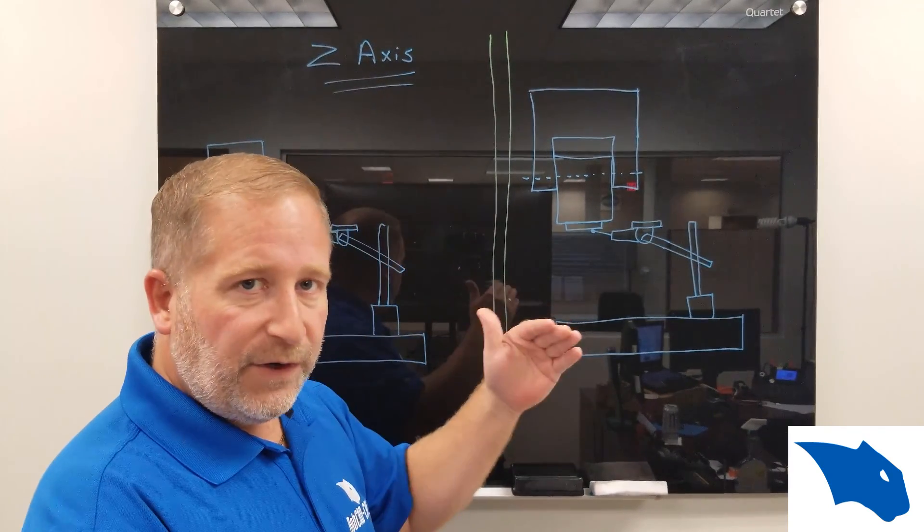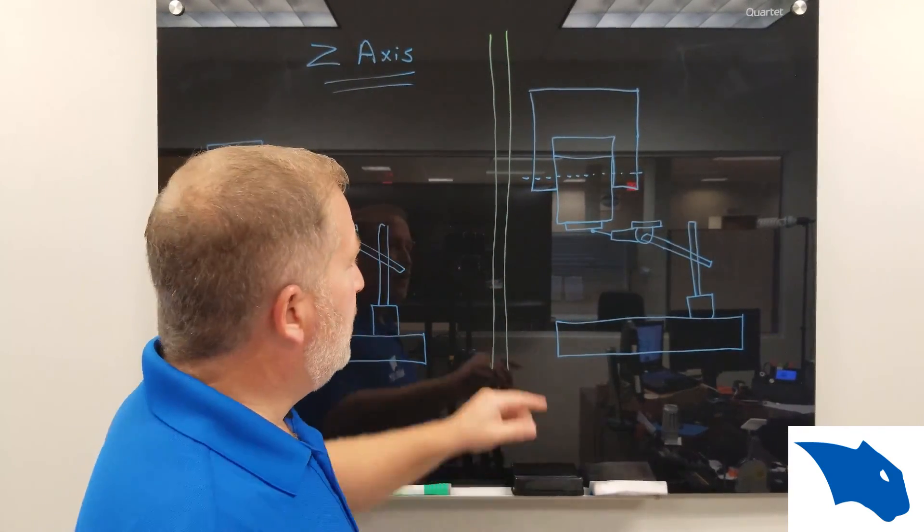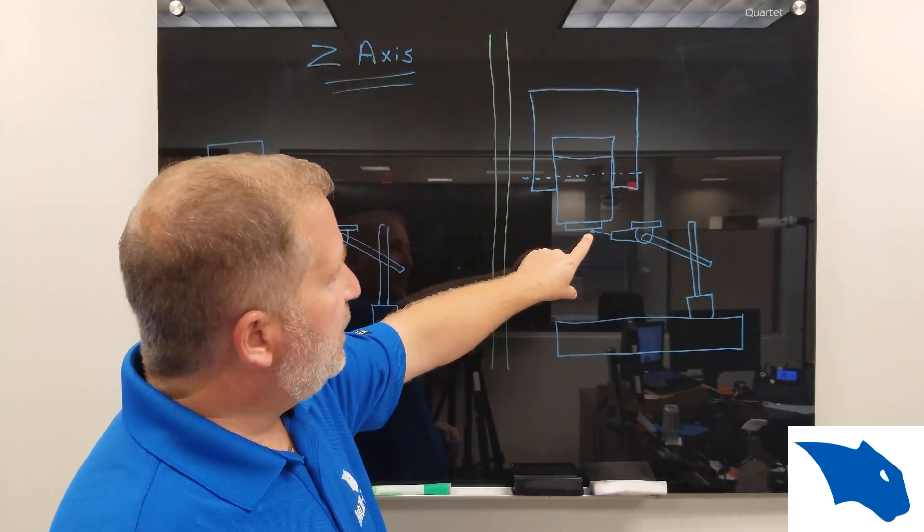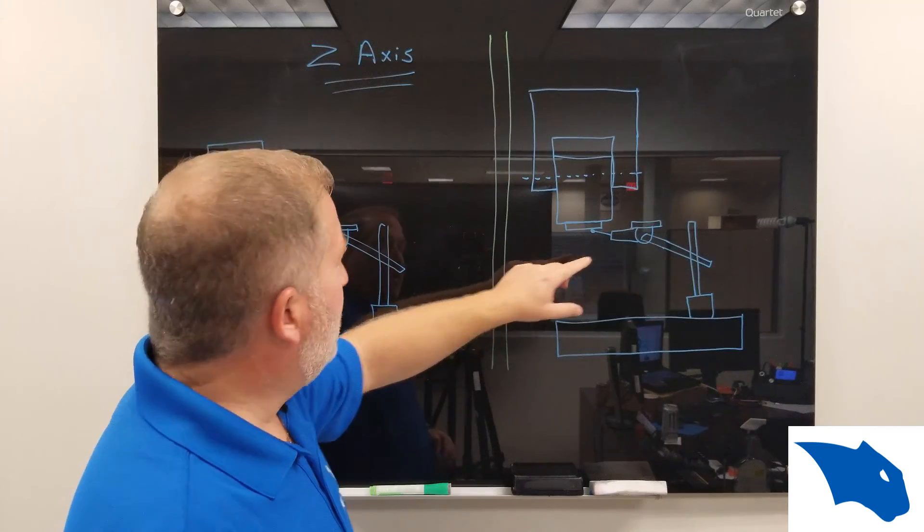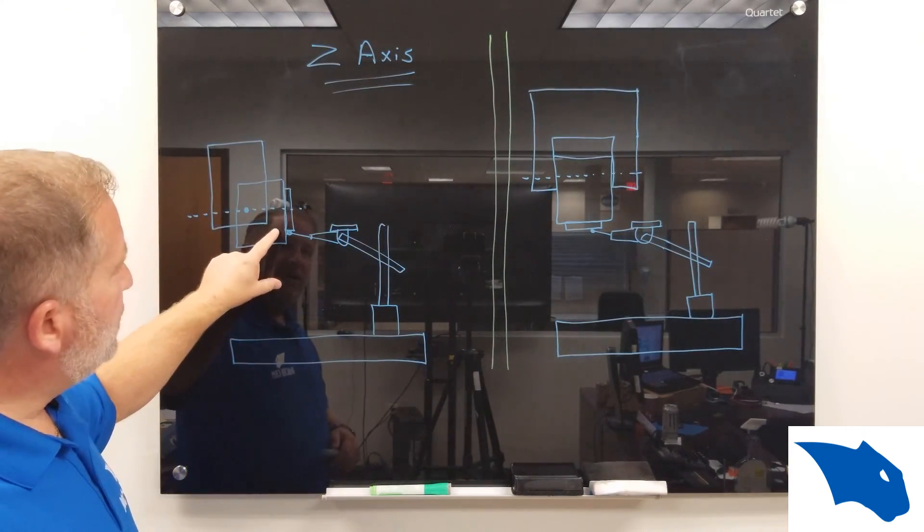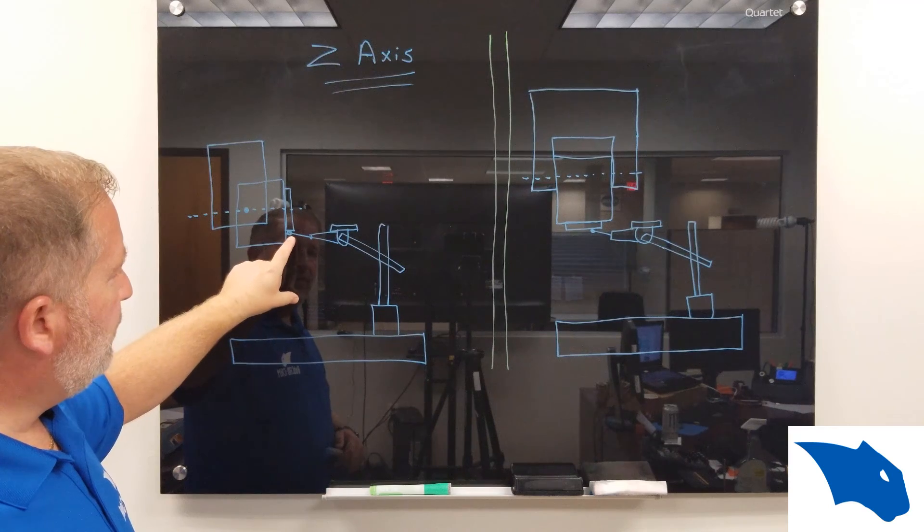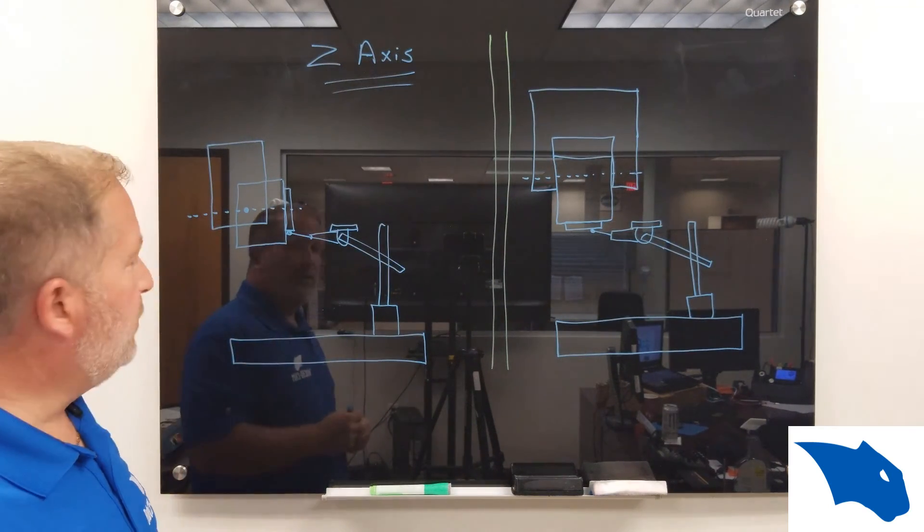looking at that difference in the z-axis amount. So when you touch off on the spindle face, that's going to be your first z that you record. Then rotate the spindle up 90 degrees and touch off on the diameter of the spindle.